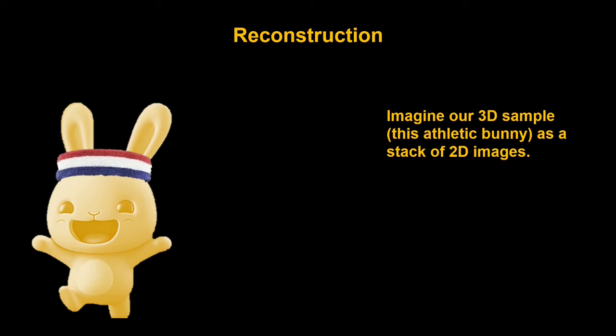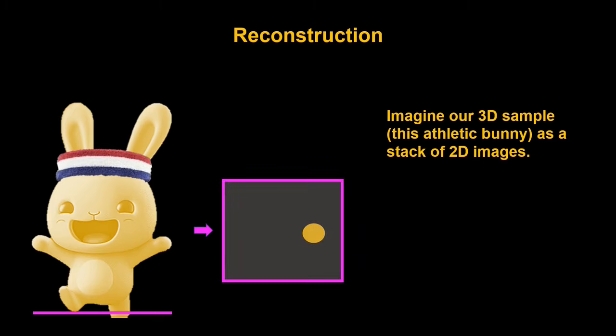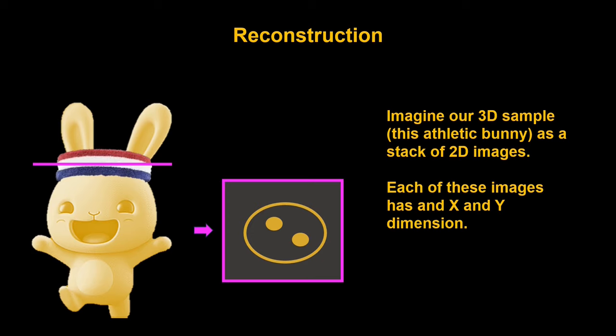And for our journey into reconstruction, I have a 3D sample here of an athletic bunny. And I want to imagine this 3D sample as a stack of 2D images. Imagine it like a stack of papers that come together to create the bunny. If we look at the slice where I have this purple line here, we would see a lot of empty space, but then we'd see one circle where the bunny's foot is. And if I move the line up into the bunny's stomach, we have a larger circle more near the center. If I move it up again, we have an even larger circle because for some reason this bunny's head is bigger than its body. And then if we go through the head band, you see that we have a circle where the head band is, and the two dots where the ears are coming in. So each of these images has an x and a y dimension.